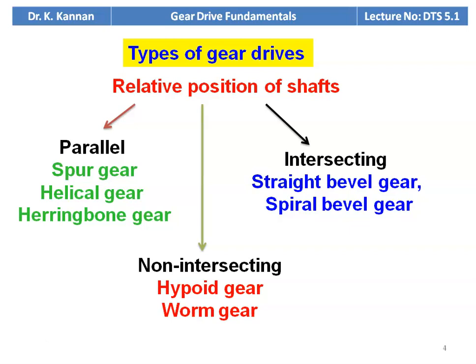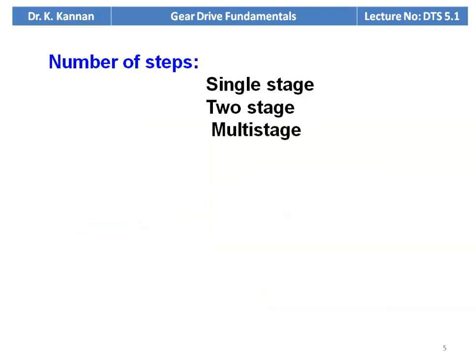Depending on the number of steps, the gear arrangement may be single stage, two stage, or multi-stage. Speed reducers use single or two-stage gearboxes, whereas the gearbox of an automobile or machine tool has multiple stages, providing multiple output speeds from a single input speed depending on the requirement.